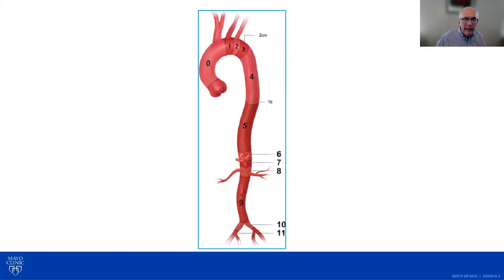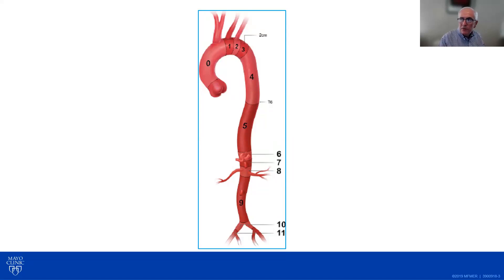Another way to characterize the parts of the aorta is by a numerical system where each aortic segment has a number. This is particularly useful for surgeons and vascular interventionalists who do both open and endovascular work in aortic repair.